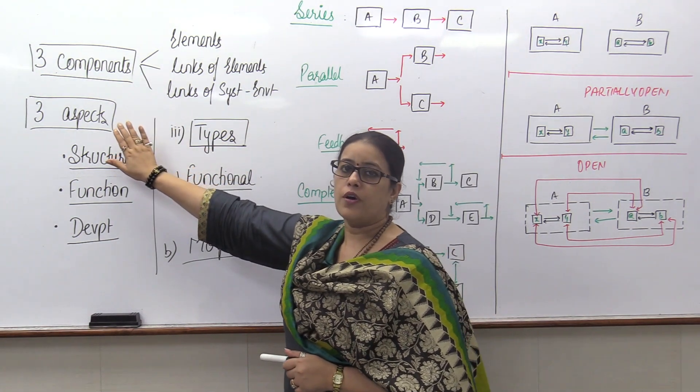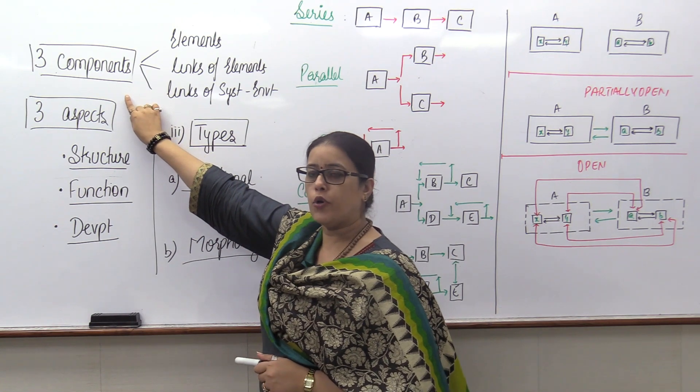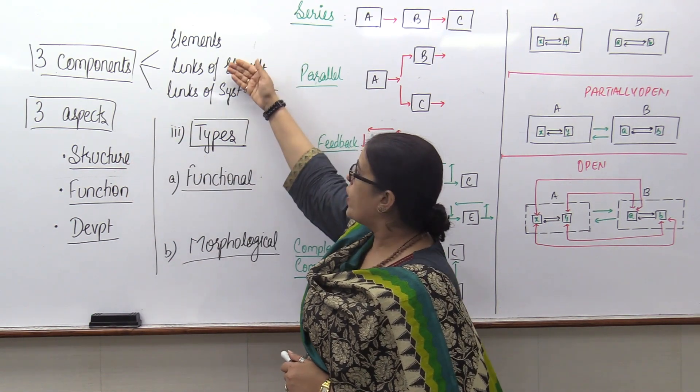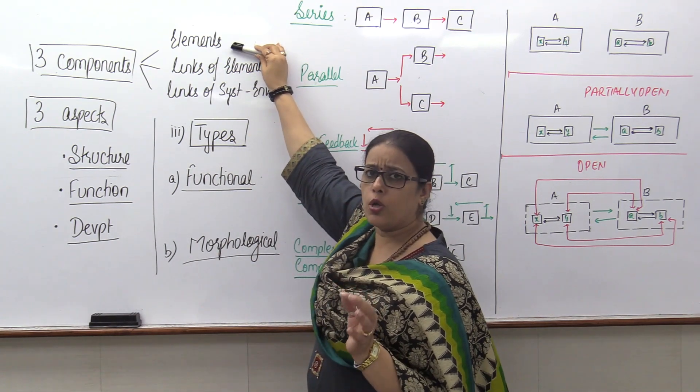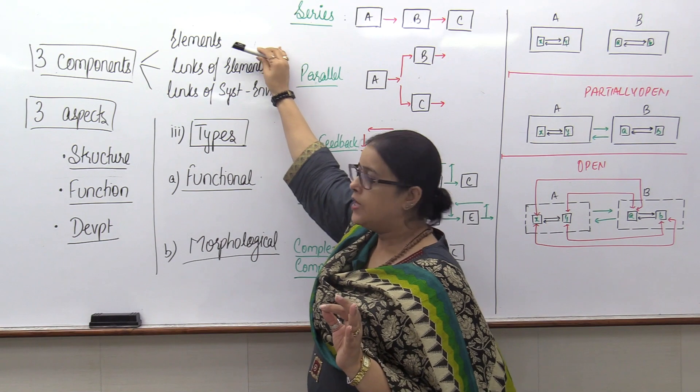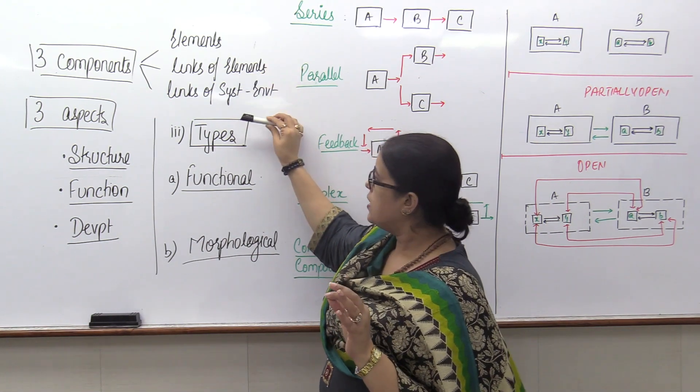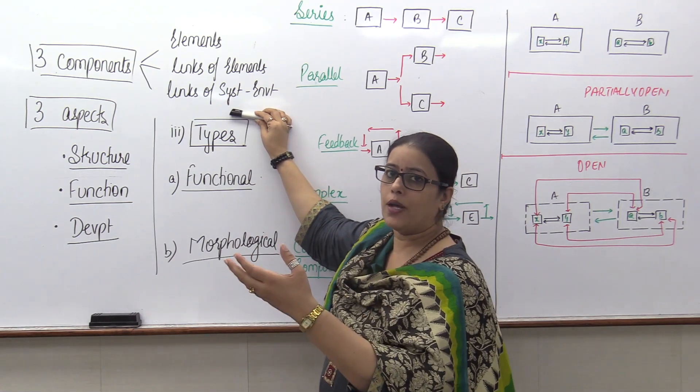What are the constituents of system? System incorporates three components and three aspects related to each other. What are the three components of system? System should always have elements, system should always have links between the elements and system should have links of it with the environment.